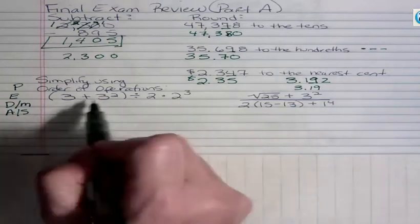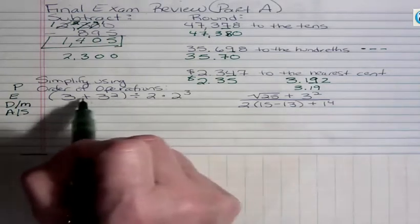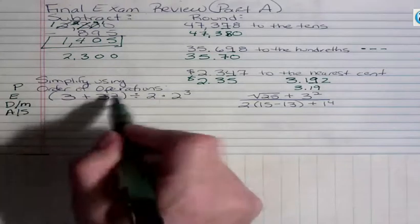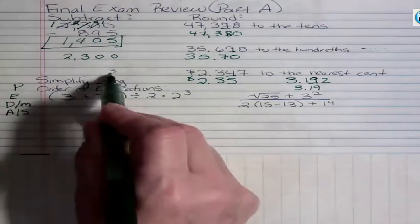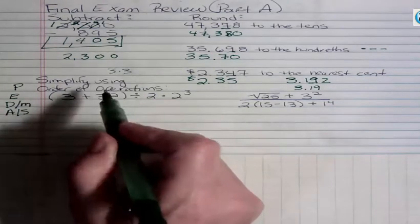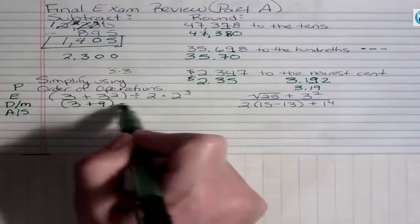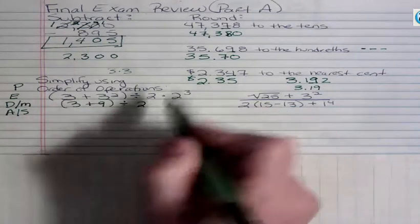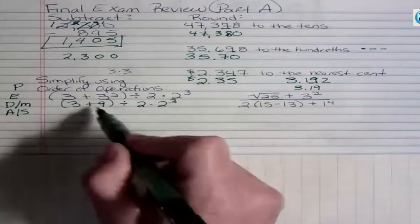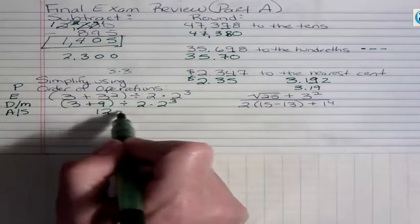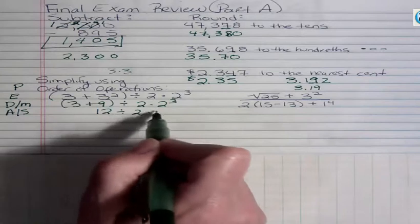Inside these parentheses, then, we're going to do, we have addition and we have an exponent. Exponent's going to come first. 3 to the second power just is 3 times 3, right? So that means 9. So I have 3 plus 9. And the rest of this, I'm going to go ahead and just bring down. I'm going to work inside the parentheses. 3 plus 9 is 12. And then divide it by 2 and then times 2 to the third.